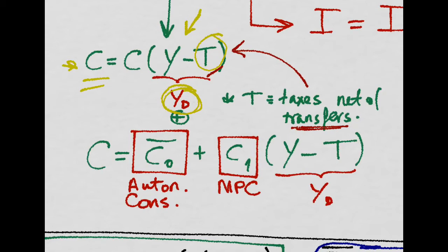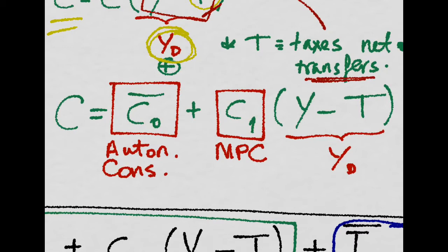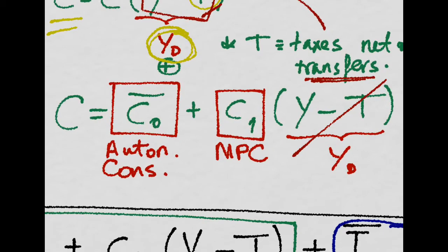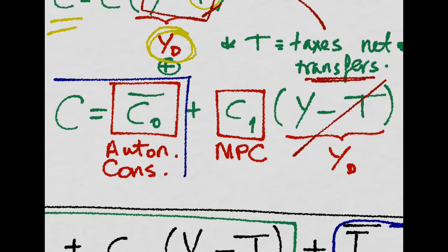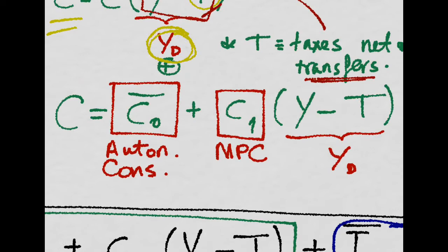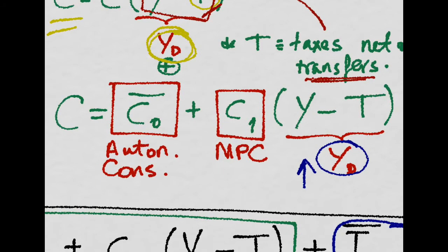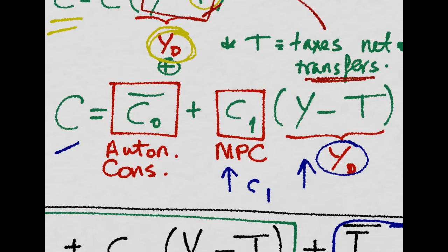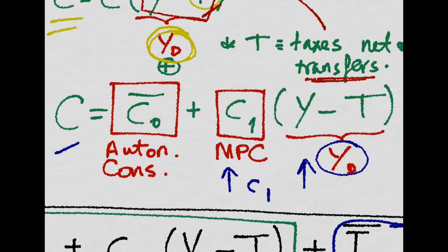The basic idea is that if households have no income whatsoever, they will just consume this amount, which we call autonomous consumption. But if they have income and increase this disposable income by one unit, they will increase their consumption by C1.